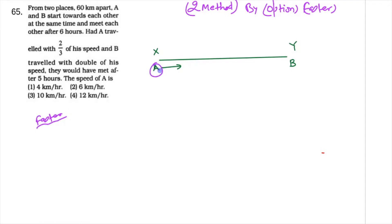A and B are at the respective places, on opposite sides of each other. Logically, the combined speed of A and B applies. When both are running together, for a time of five hours in one case and six hours in the other.